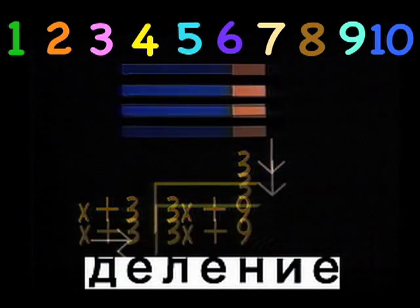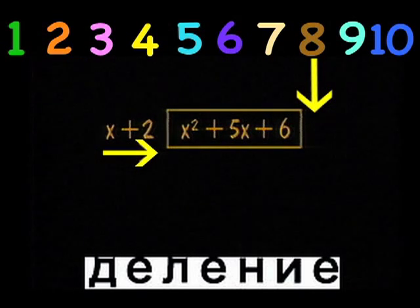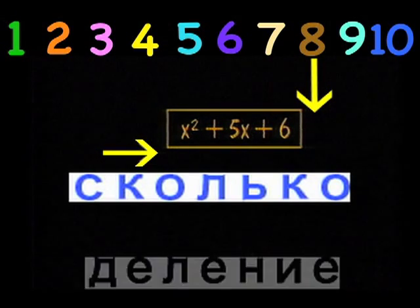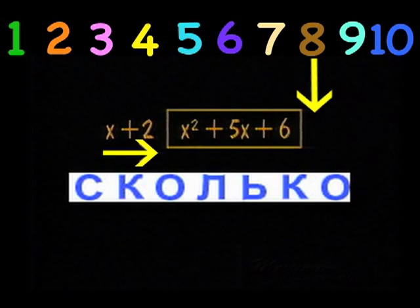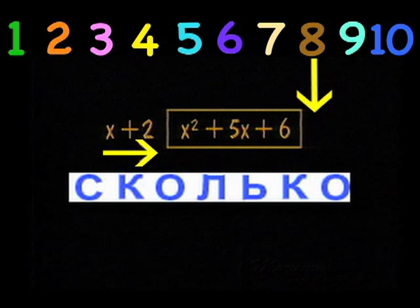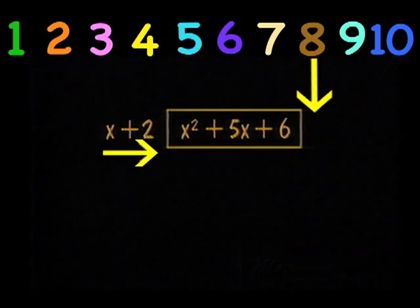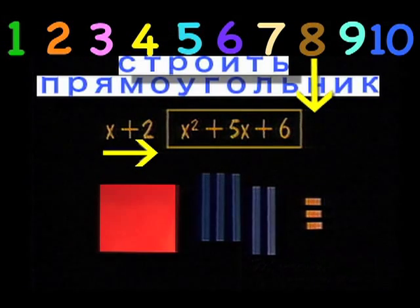Let's do another. This notation asks the question: How many x plus 2's can we count from x square plus 5x plus 6? We want to count x plus 2's from x square plus 5x plus 6. So we will build a rectangle using x square plus 5x plus 6 that is x plus 2 over.